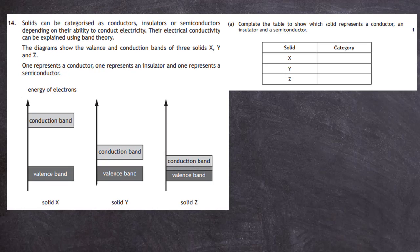Question 14 from the 2019 Higher Physics examination, section 2. Solids can be categorized as conductors, insulators, or semiconductors depending on their ability to conduct electricity. The electrical conductivity can be explained using band theory. The diagrams show the valence and conduction bands of three solids X, Y, and Z — one represents a conductor, one an insulator, and one a semiconductor. For one mark, we are asked to complete the table to show which solid represents each type.